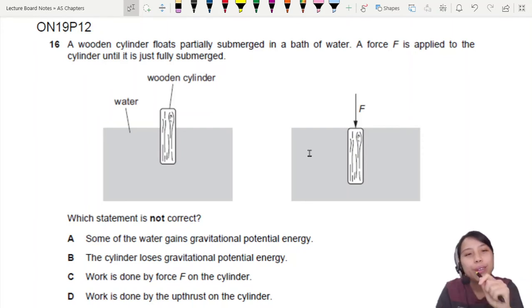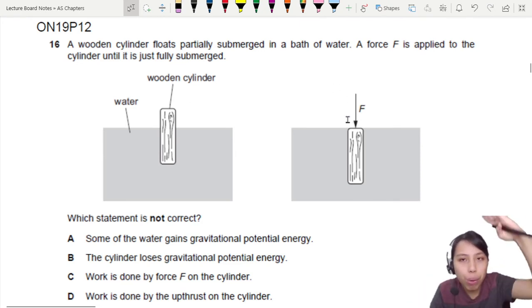Here we have a wooden cylinder floating partially submerged in a bath of water. A force F is applied to push this cylinder down until it is just fully submerged. Which statement is not correct?